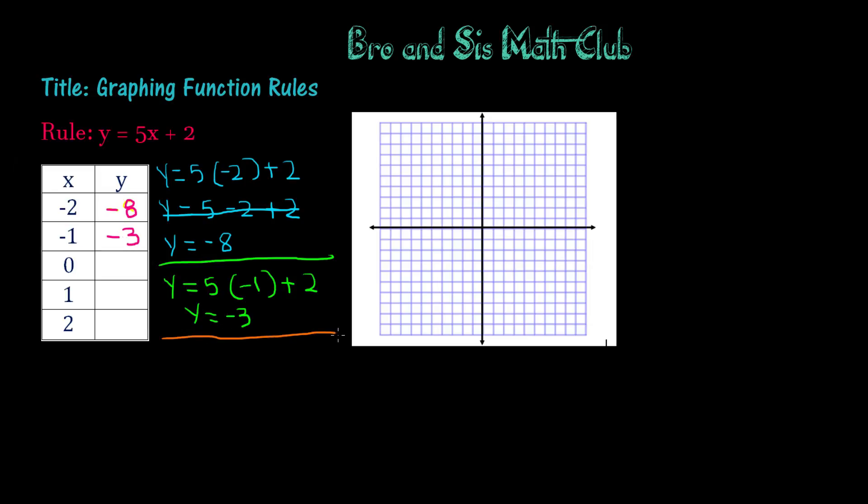So we have negative 3. Next, we have y equals 5 times 0 plus 2. 0 times any number is 0, plus 2 is 2. So we have y equals 2 for x equals 0.